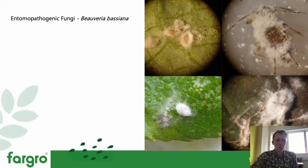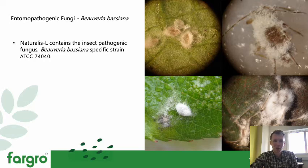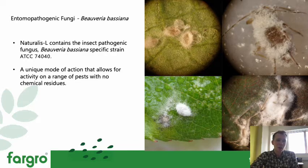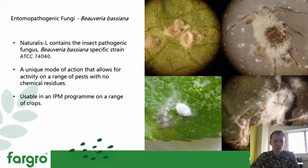As an example, let's look at an entomopathogenic fungus called Beauveria bassiana. It's very popular and has been around for quite a while. It's available as Naturalis, which contains a specific strain ATCC74040, and also as Botanigard. You can see how the product works: the Beauveria bassiana spores are actually sporulating out of the insect body post-infection. It has a relatively unique mode of action, very unlikely to develop any resistance issues, and it's quite good on a range of different soft-bodied pests. It's very effective in an IPM programme, works well alongside macrobiological controls, and we've seen this product really work effectively and rip through populations when the environmental conditions are correct.